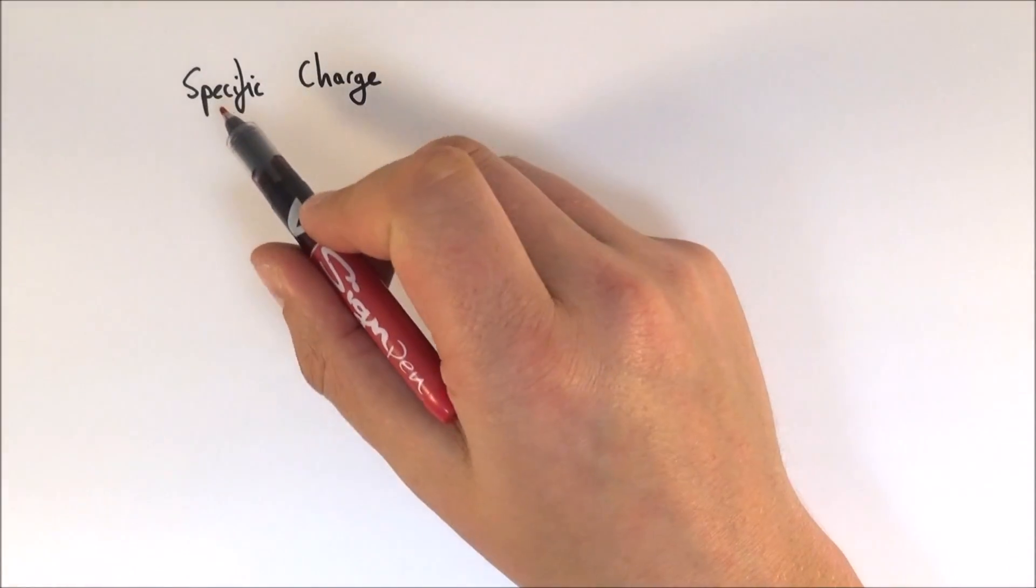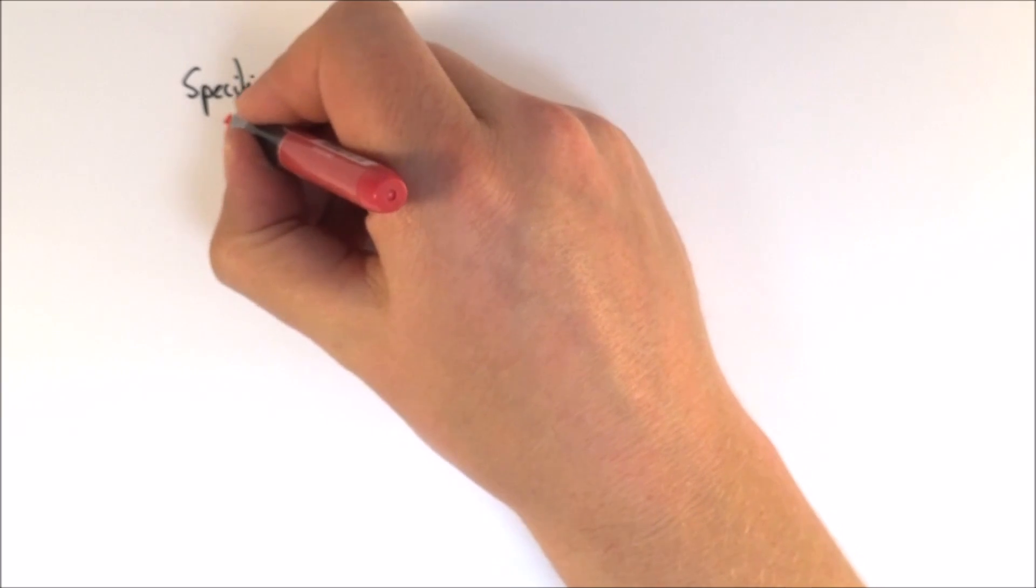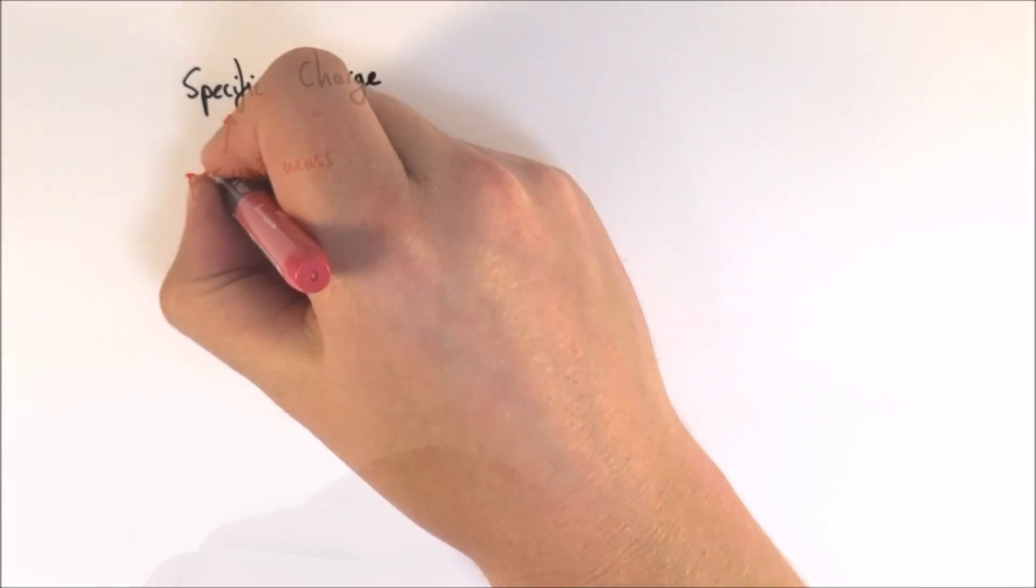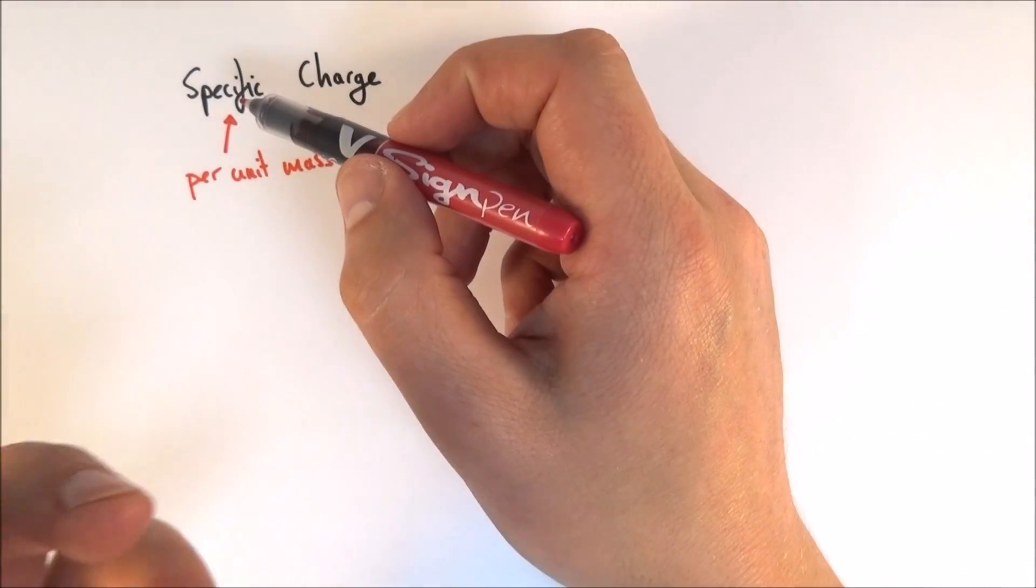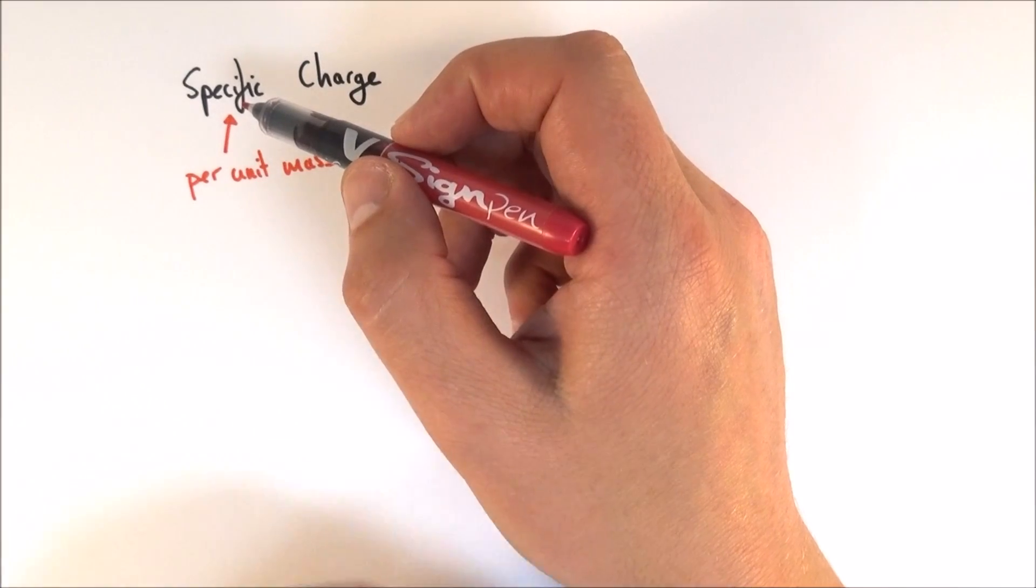Now something you might be asked to do is to calculate the specific charge of some kind of particle. The word specific has a very specific meaning in physics and it means per unit mass. So another example of this might be something like specific heat capacity, which is the amount of energy needed per unit mass.